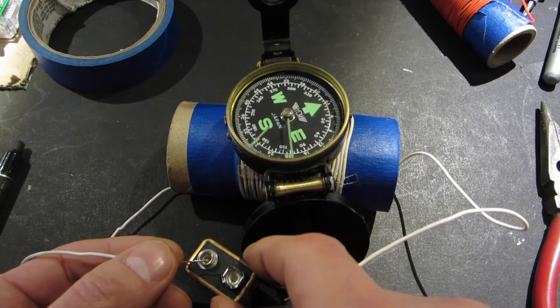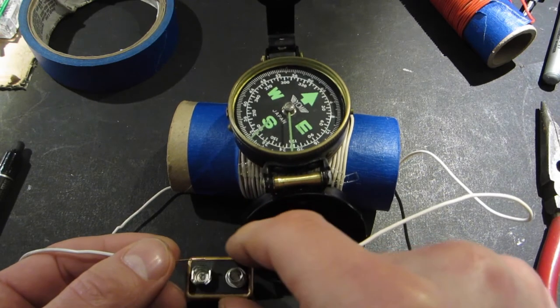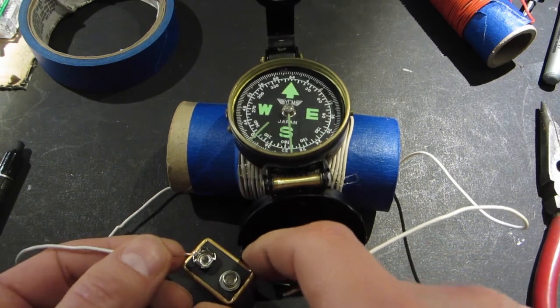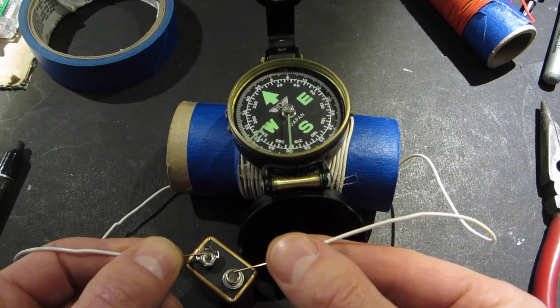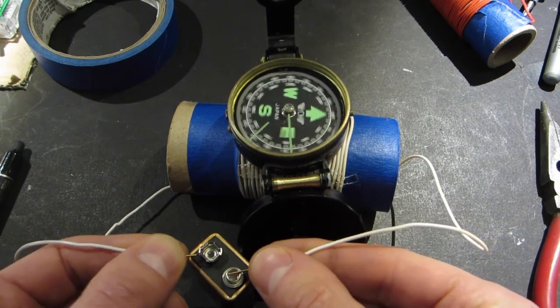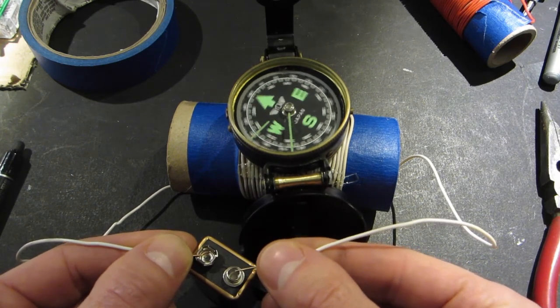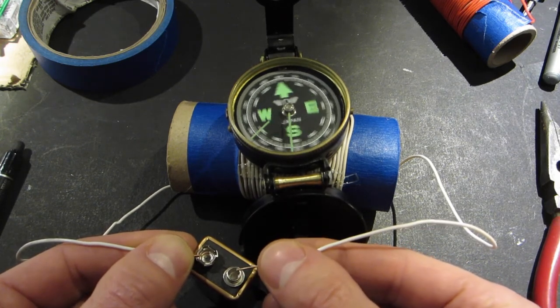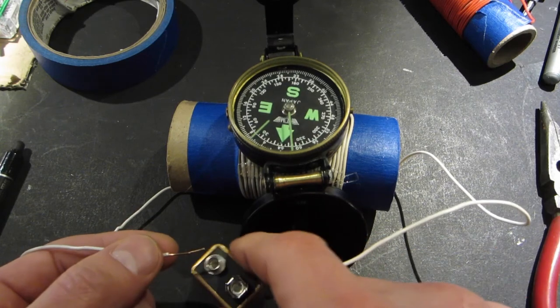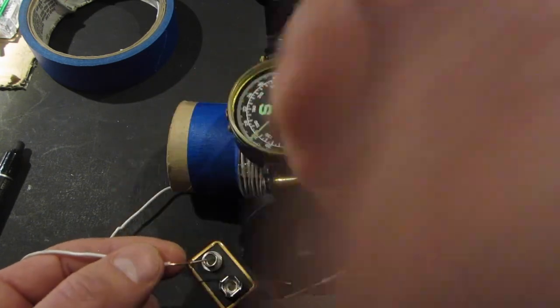Now Hans Christian Ørsted said that if you reverse the current, then you reverse the magnetic field. What happens when we do that? So by reversing the current, you reverse the magnetic field.